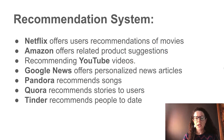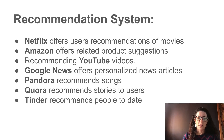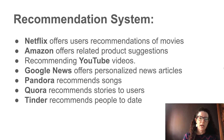Here are some examples of recommendation systems. Netflix offers users recommendations on movies, Amazon offers product suggestions, YouTube recommends videos, Google News recommends articles to read, Pandora recommends songs, Quora recommends stories for users, and Tinder recommends people to date.